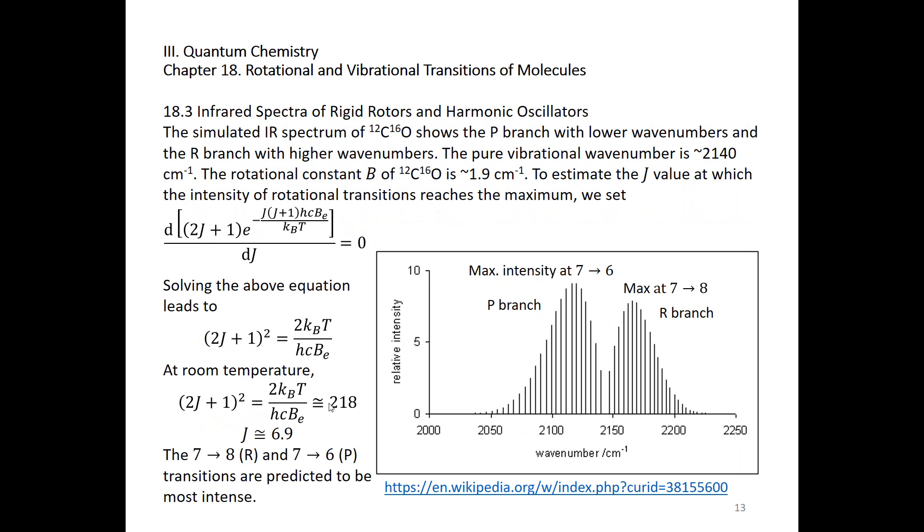The simulated infrared spectrum of carbon monoxide shows the P branch with lower wave numbers and the R branch with higher wave numbers. The pure vibrational wave number is right at the center between the P branch and the R branch, about 2140 cm⁻¹. The rotational constant B is roughly 1.9 wave numbers.